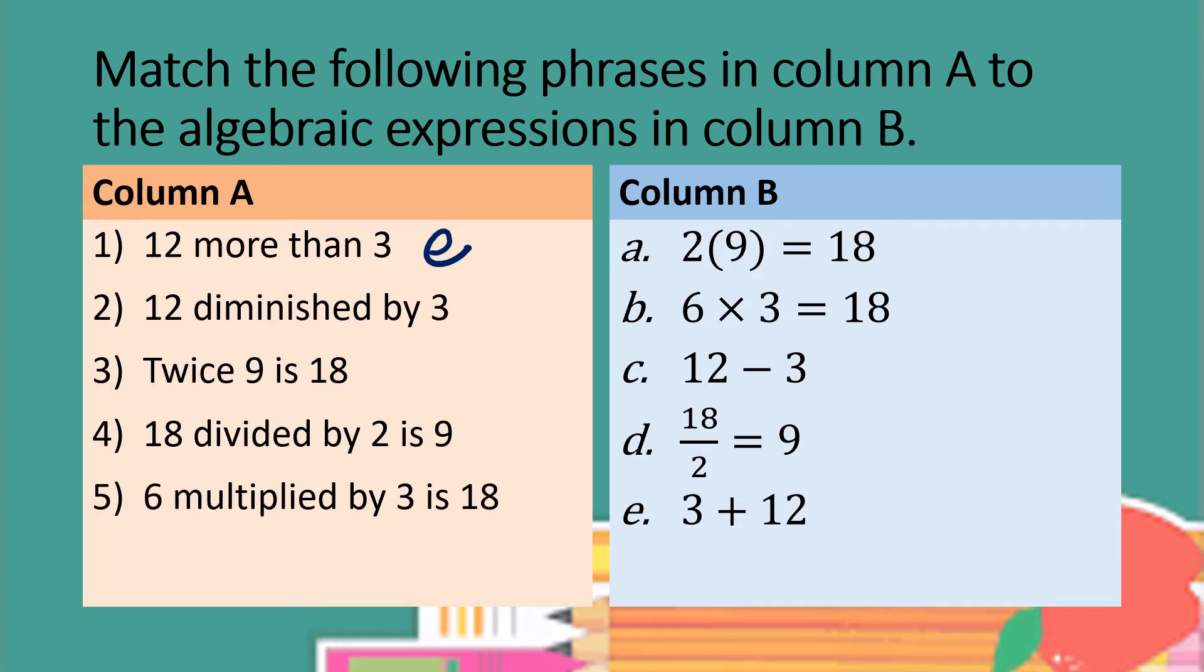Number 2. 12 diminished by 3. Diminished signifies subtraction, so 12 minus 3. That's letter C. Twice 9 is 18. That's 2 times 9 equals 18. Is signifies the equal sign. 2 times 9 equals 18, that's letter A.